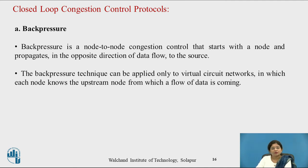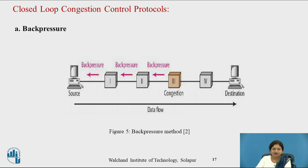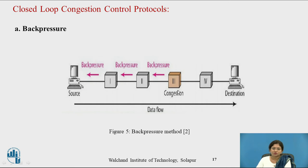Now let us see the closed loop congestion protocols. Backpressure is a node-to-node congestion control that starts with the congested node and propagates in the opposite direction of data flow back to the source. This technique can be applied only to virtual circuit networks, where each node knows the upstream node. For example, if congestion happens at node 3, it sends a signal to router 2, then router 2 to router 1, and router 1 to the source. The middle routers take part in this backpressure.